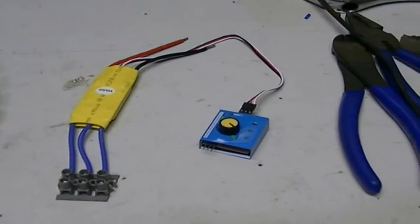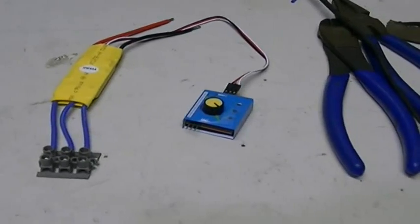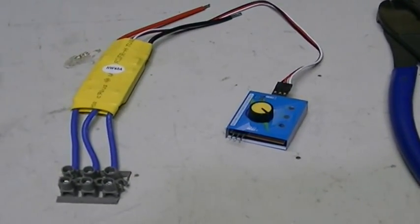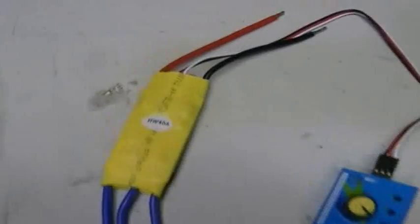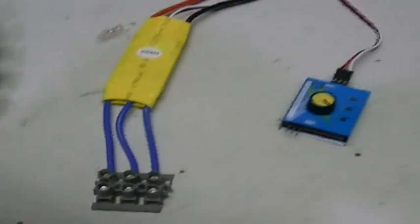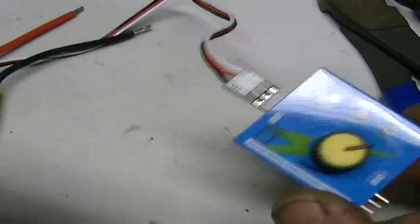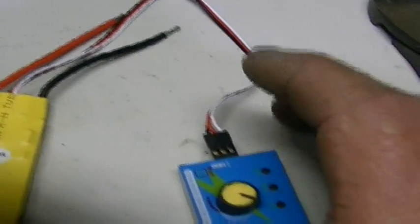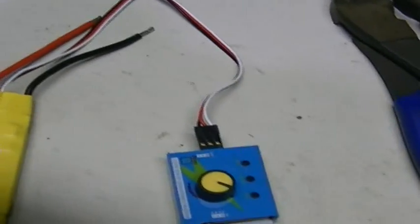Alrighty, this is part two of our electric outboard project. Our speed controller and servo tester turned up today. That's just a 30 amp speed controller available off eBay, 12 bucks I think. That is just what they call a servo tester for testing the servos of your RC vehicles. I ordered one and I had three of them turn up, so don't know what happened there.